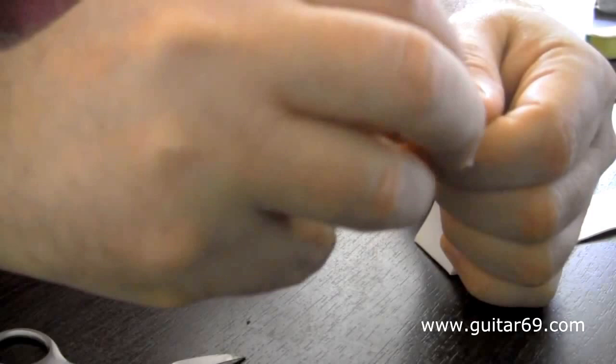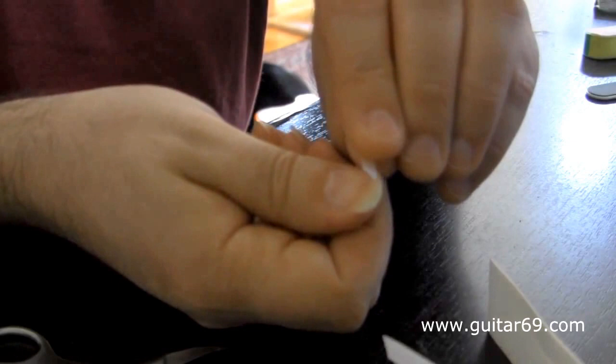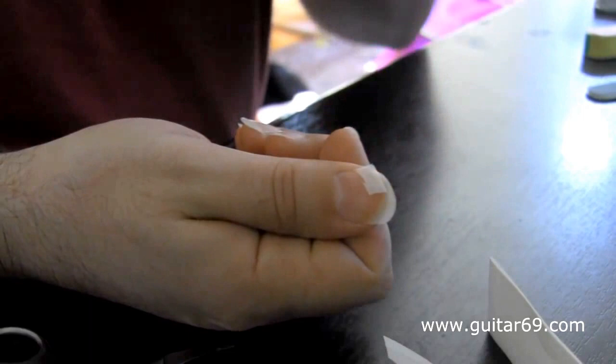The nice thing about this particular silk is it has glue on one side, so you can put it on the nail, and it won't come off easily. I mean, it'll come off easily, but it will only come off if you pull it off. So now that's on the nail. There's a little excess, I'll trim that off later.